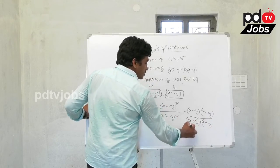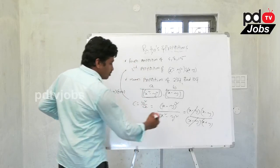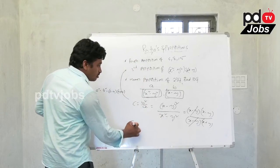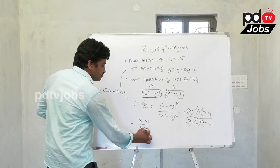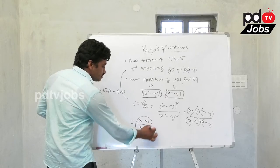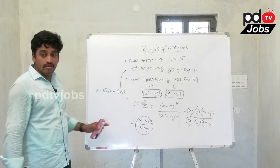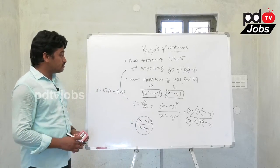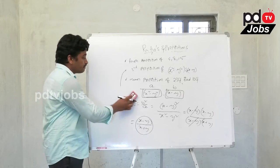The (x - y) terms cancel. So the answer is x - y divided by x + y. The third proportion is (x - y)/(x + y).